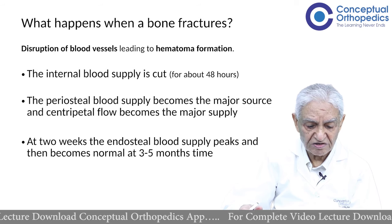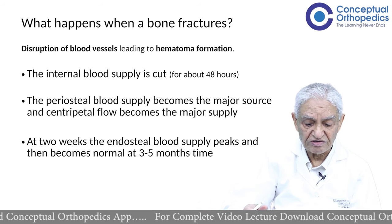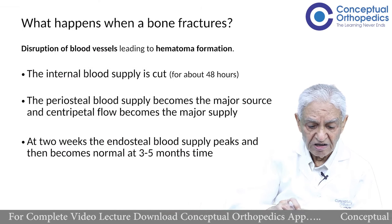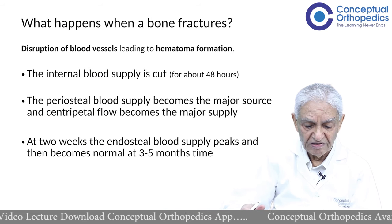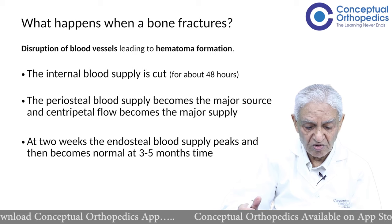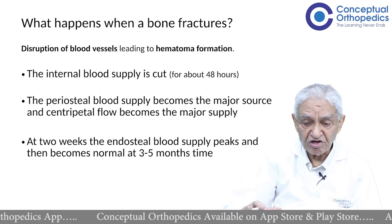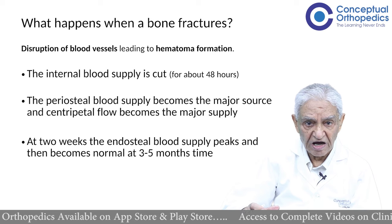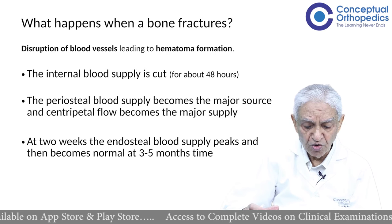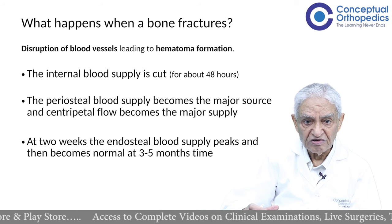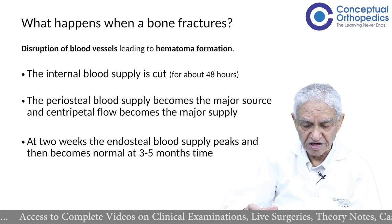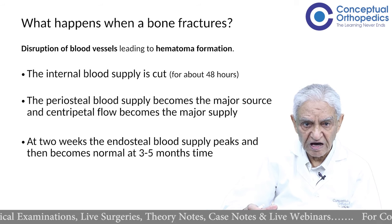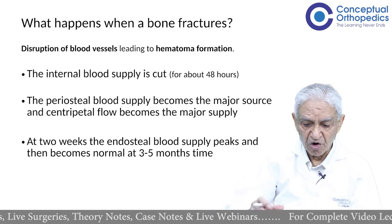What happens when bone fractures? There is a disruption of blood vessels leading to hematoma. The moment the bone breaks, there is a disruption of blood supply to the bone and a collection of blood around it — this is called the fracture hematoma. In due course of time, this gets invaded by neoangiogenesis. After some time, mineral deposition takes place in this fracture hematoma, and it is then called by different names: a soft callus, a mineralized callus, a remodeling callus.